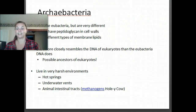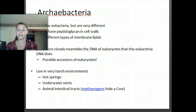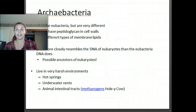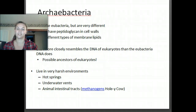The second type of bacteria — not as common — is archaebacteria. They look like eubacteria but they're very different. They don't have peptidoglycan in their cell walls — make sure you write that down, it's a big difference. They live in really harsh environments like hot springs, underwater vents, and in animal intestines. But even though they're so weird, their DNA is actually really close in structure to eukaryotes. So archaebacteria are actually more closely related to eukaryotes — those really complex cells — meaning we might be more closely related to archaebacteria than to eubacteria.